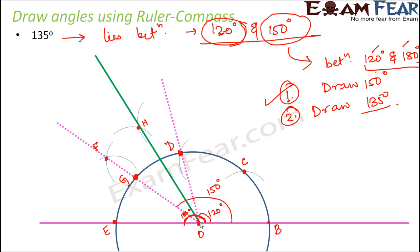Now, when you join this point H to point O, what is it? You get this angle, which lies exactly between 120 and 150. So that means this angle is 135. So in this fashion, you will be able to draw a 135 degree.